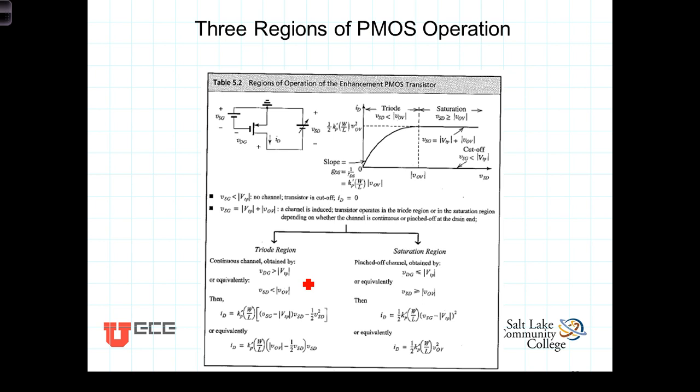The triode region exists when the drain to gate voltage is greater than the threshold voltage, or equivalently, when the source to drain voltage is less than the overdrive voltage. Then the equations defining the current take this form.